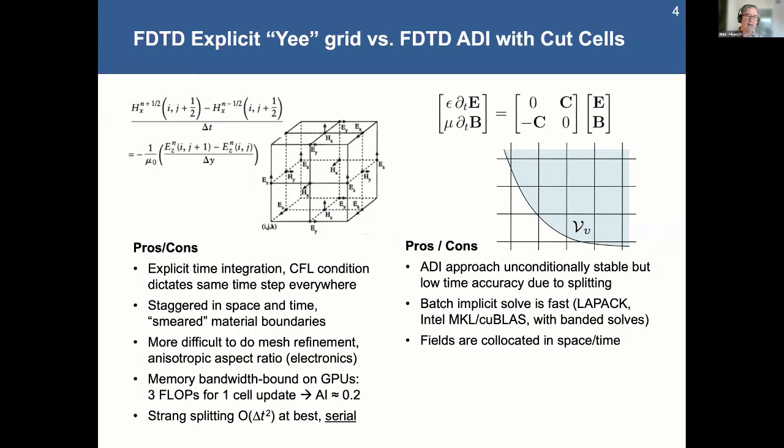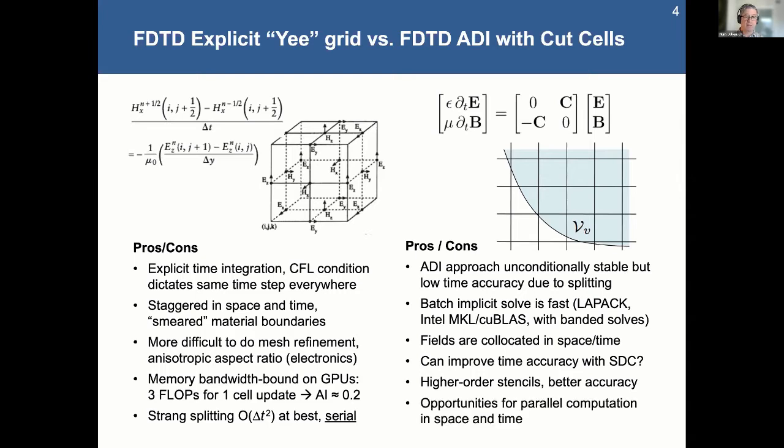And the second of all, with the Yee grid, you end up with all of these staggered things in space and time. So it's a lot more complicated. And one of the questions that I came to this with was, you know, we in this community, we've talked about things like PFASST method, Mike Minion's work with others on taking spectral deferred corrections to speed up. And the other thing is, instead of the simple staggered second-order differencing, we can do much higher-order stencils and get better accuracy as a result.